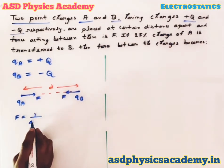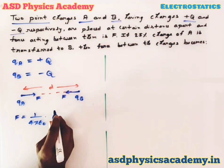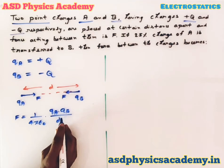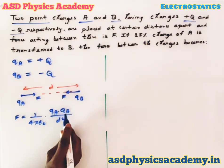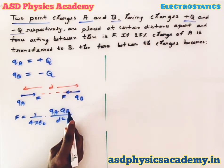Here ε₀ is permittivity of free space or vacuum. Sometimes we use it for air also. qa and qb is the magnitude of the charges and d is the distance between these two point charges.